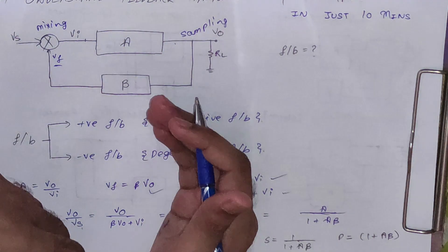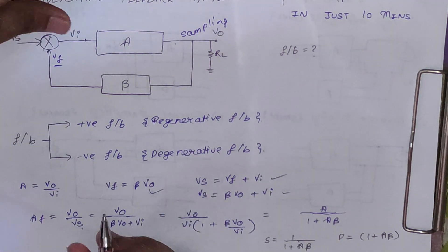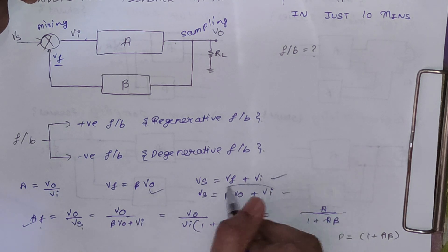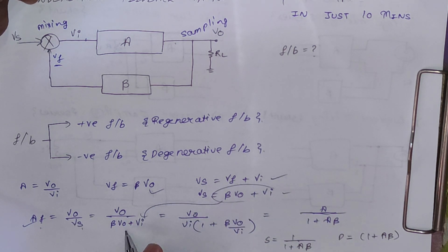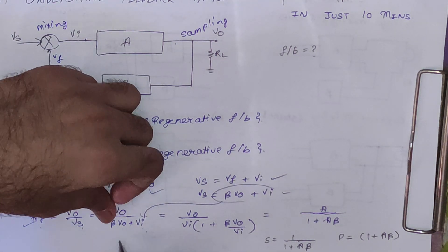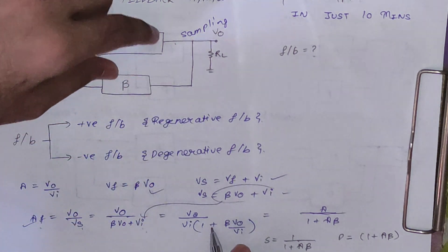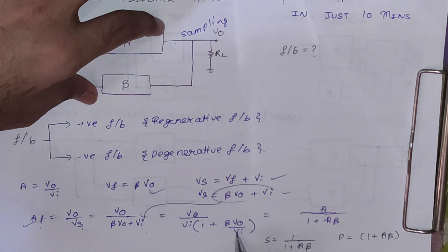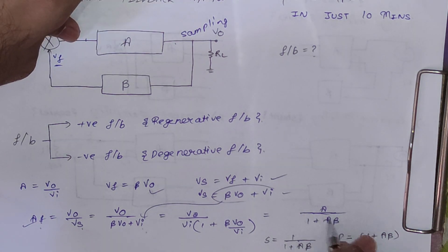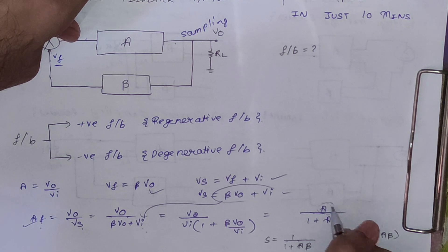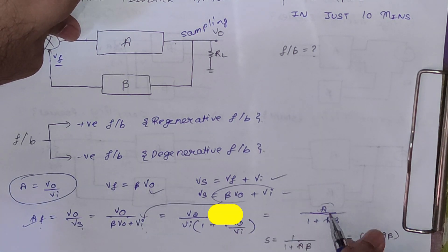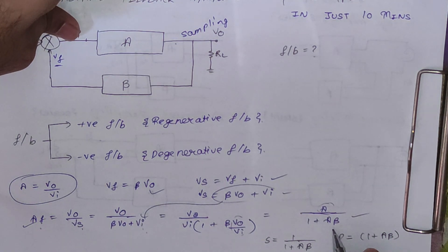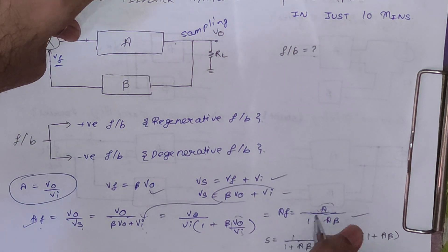Since both output and input parameters are in terms of voltage, this gain is the voltage gain: Af = Vo/Vs. Substituting Vs = beta·Vo + Vi and taking Vi common, we get Vo/Vi divided by (1 + beta·Vo/Vi). Since Vo/Vi = A (open-loop gain), the closed-loop gain is Af = A / (1 + A·beta).